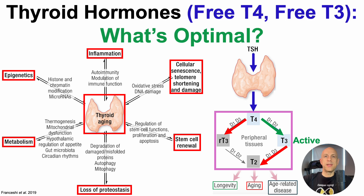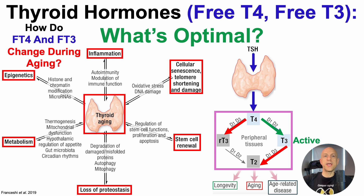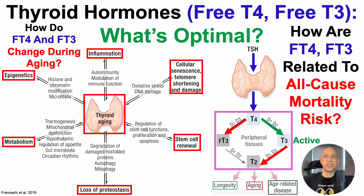With that in mind, in today's video, for the thyroid hormones free T4 and free T3, what's optimal? To address that, we'll look at how these thyroid hormones change during aging and what their association is with all-cause mortality risk.